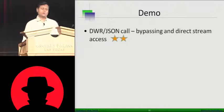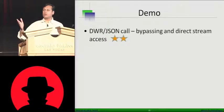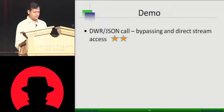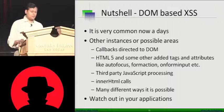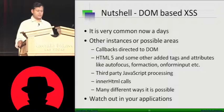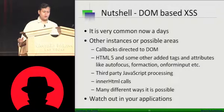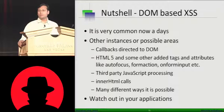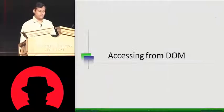Some libraries are not handling content type correctly — if you send JSON but say text/plain as the content type, the library will go ahead and process the JSON just fine. We have covered three types of DOM-based cross-site scripting. Other instances are also possible: callback directed to DOM, HTML5 coming up with different DOM attributes like autofocus, form action, on-form inputs, third-party JavaScript processing, innerHTML calls, and many other ways. DOM-based XSS is one type of DOM attack.